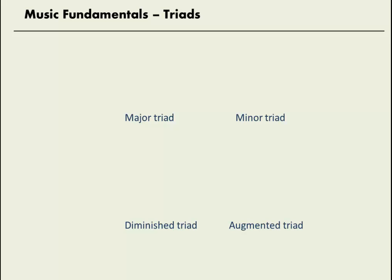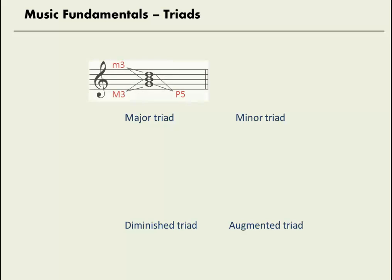Each triad has a distinctive sound and a distinctive pattern of intervals. The major triad has a major third between the root and the third, a minor third between the third and the fifth, and this makes a perfect fifth between the root and the fifth.